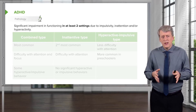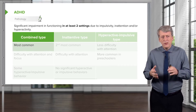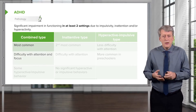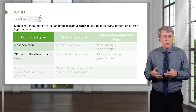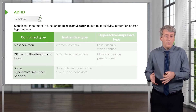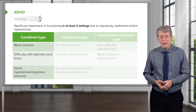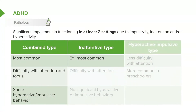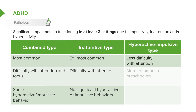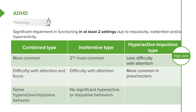There are three major types. The combined type is the most common — patients have difficulty with attention and focus and have some hyperactive or impulsive behavior. The inattentive type is the second most common; they may have difficulty with attention but no significant hyperactive or impulsive behaviors. The hyperactive-impulsive type is less common and is more prevalent in preschoolers, where the hyperactive component predominates.